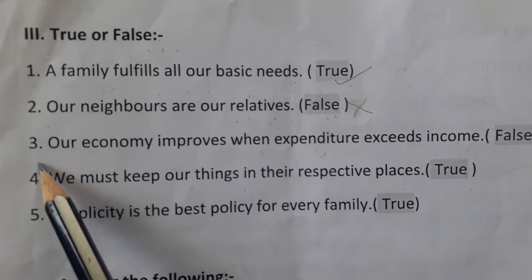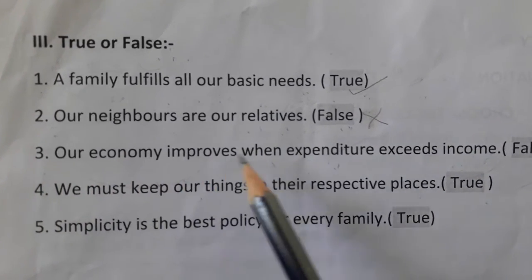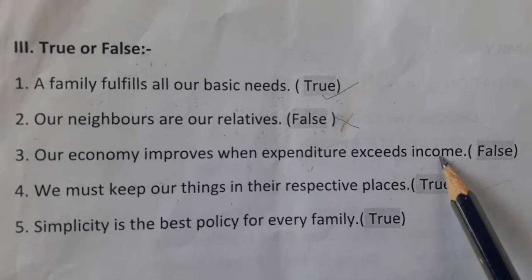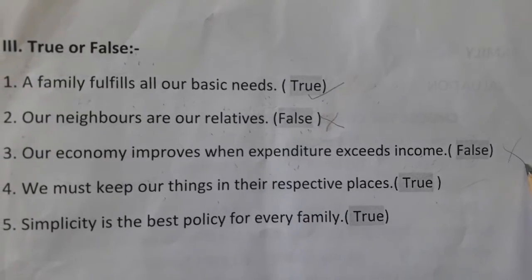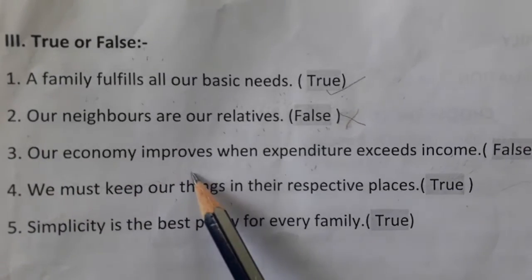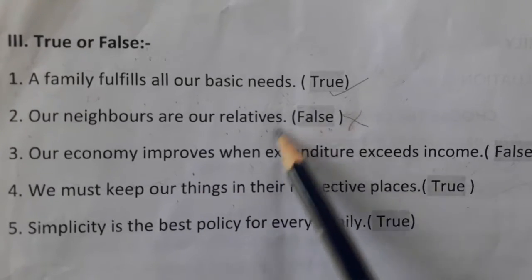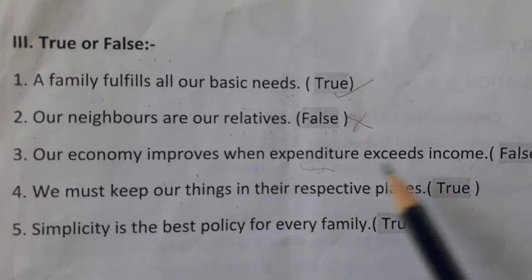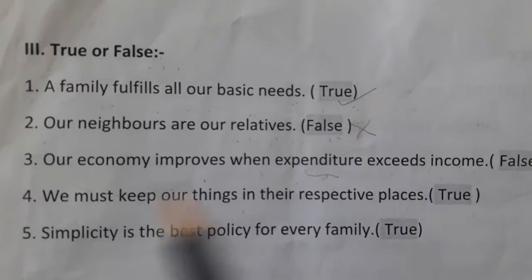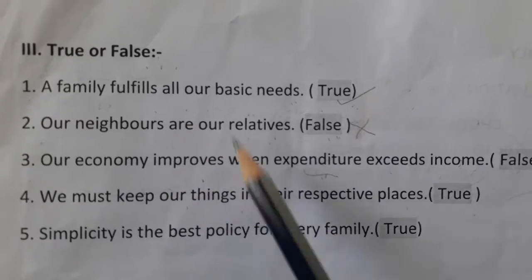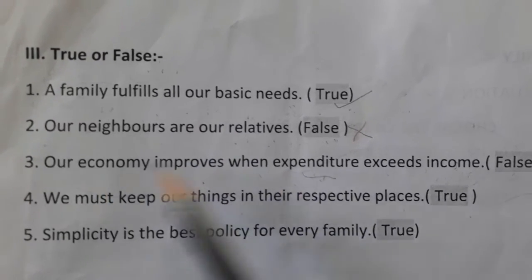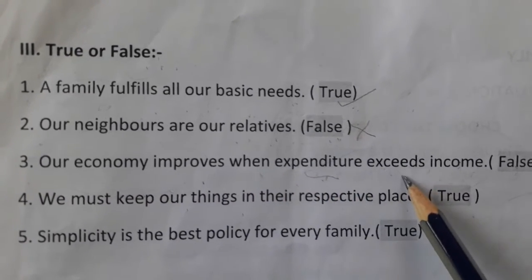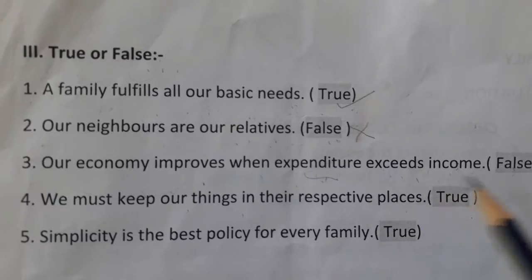Third one: our economy improves when expenditure exceeds income. The answer is false. Because our economy does not increase when expenses exceed income. Expenditure means expenses. If expenses exceed income, our economy level decreases, not improves. So the sentence is false.